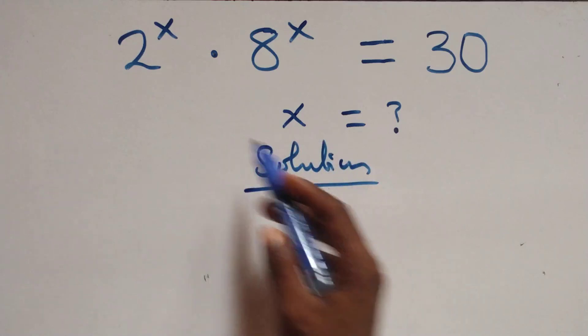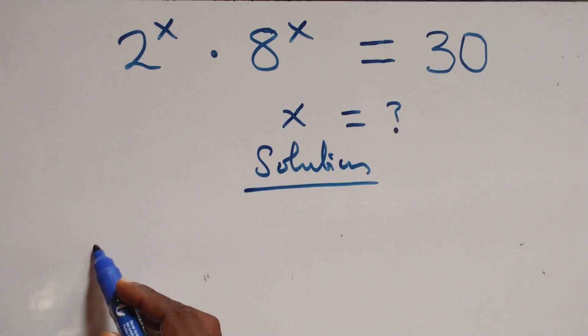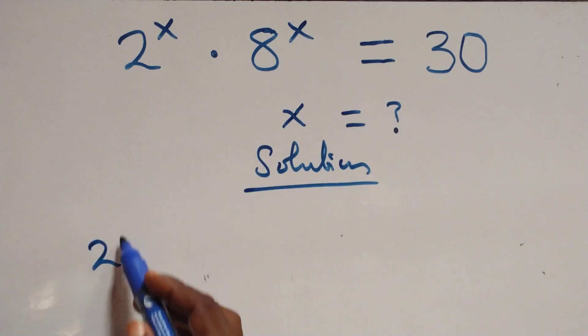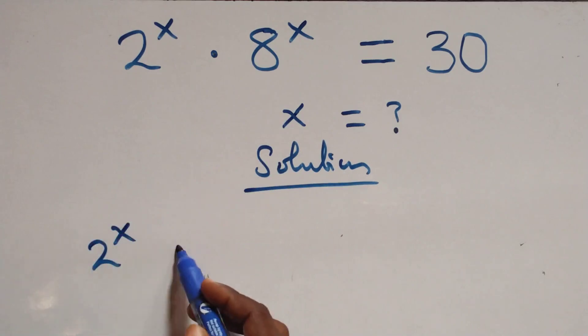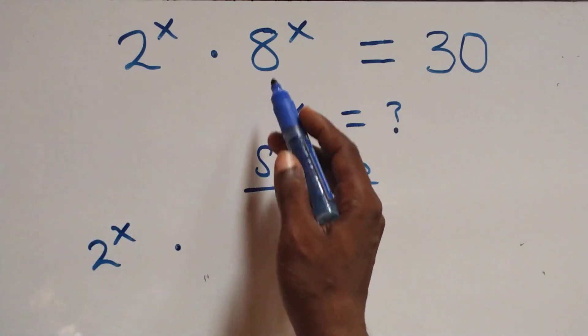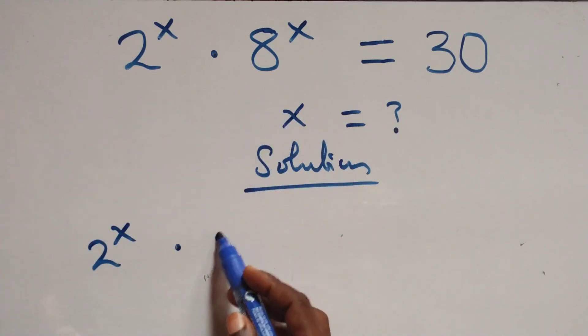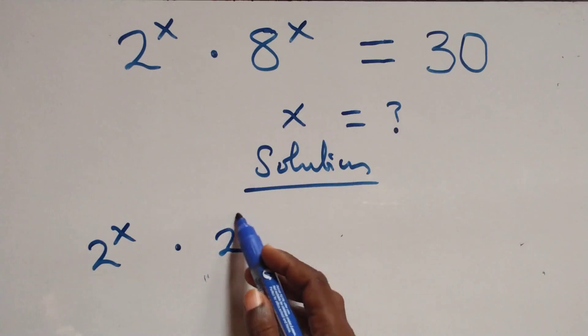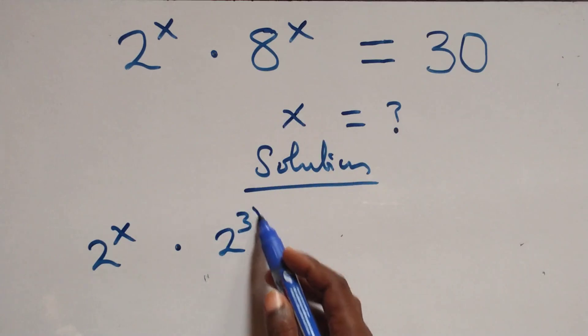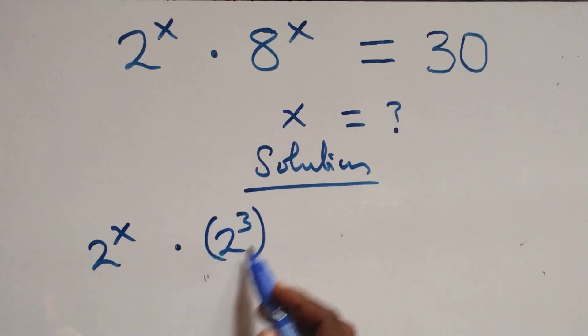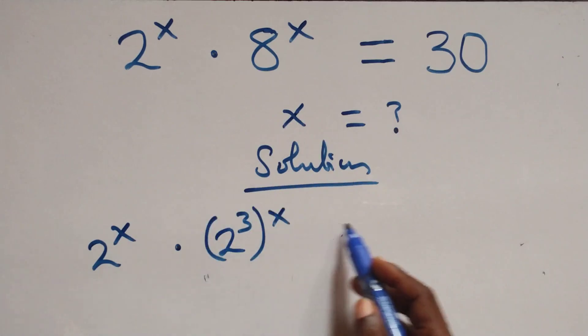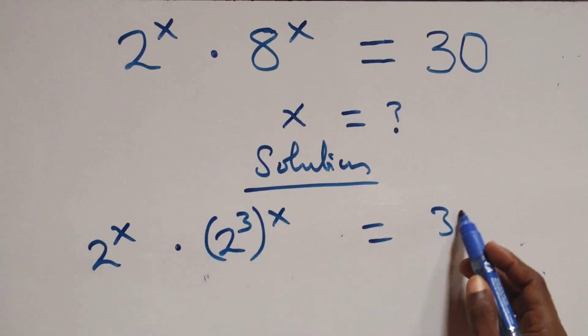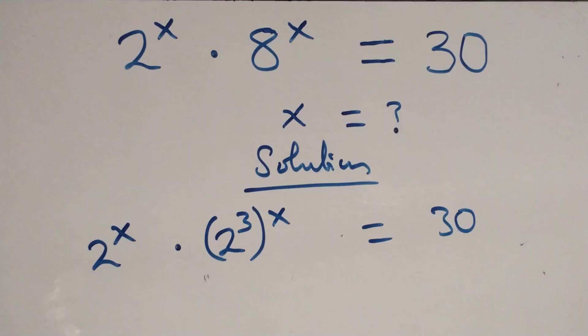And what we have here, we can rewrite this. When we have 2 raised to power 3x, it can be written as 2 raised to power 3, then raised to power x, equals to 30 from here.